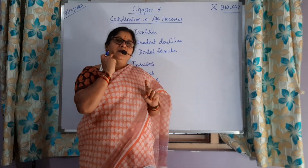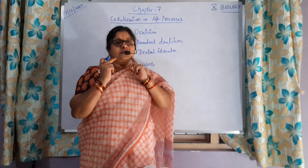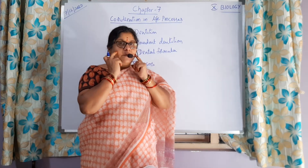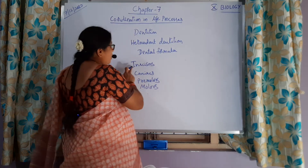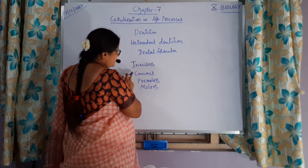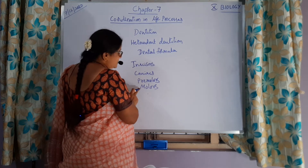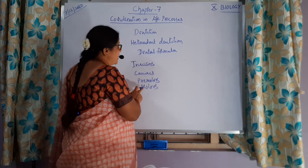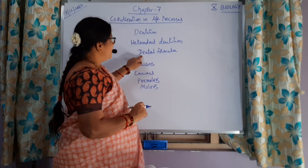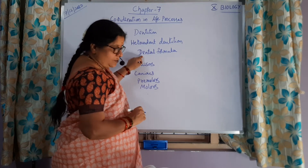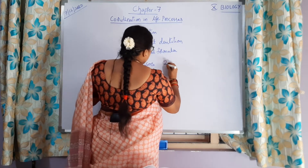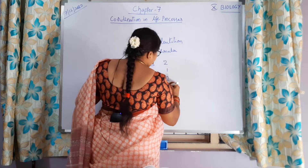In the lower jaw there are two sides and in the upper jaw two sides. All these will be known by observing the dental formula. So on one side: two, one, two, three.